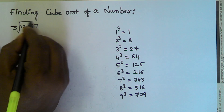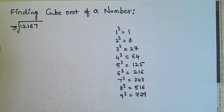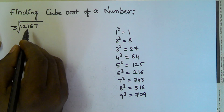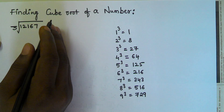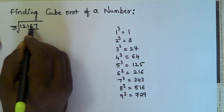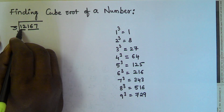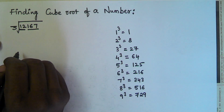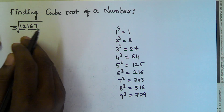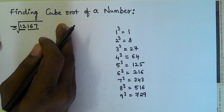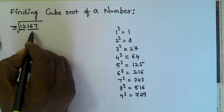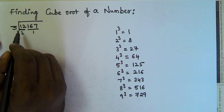To find the cube root of a given number, we divide the given number into parts starting from the rightmost. Each part contains 3 digits. So 167 is one part and the remaining digits 21 are the second part. That is step 1: divide the given number into parts starting from the rightmost, each part containing 3 digits.